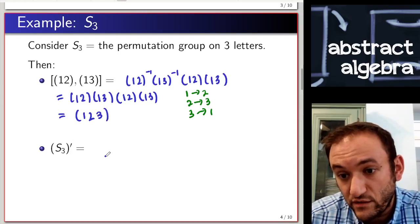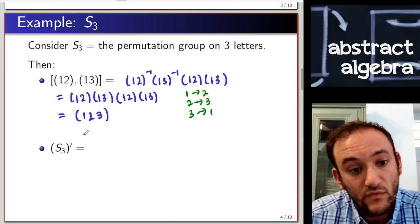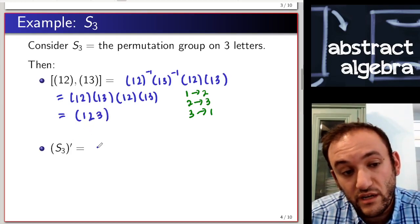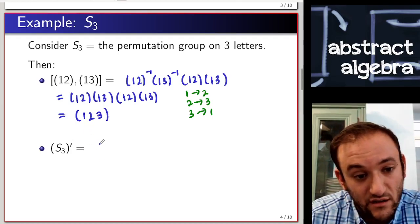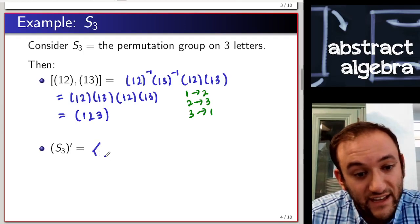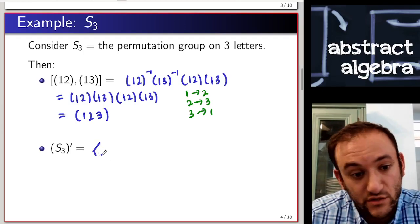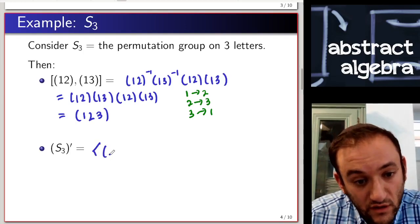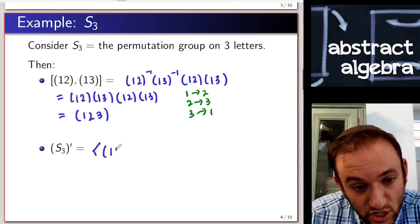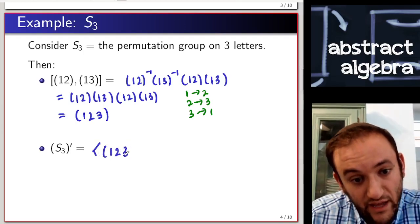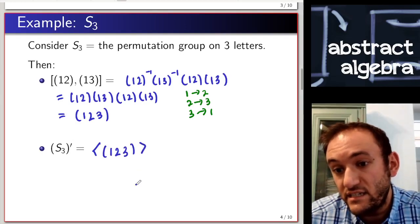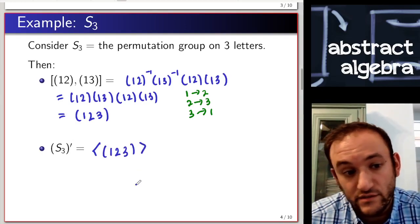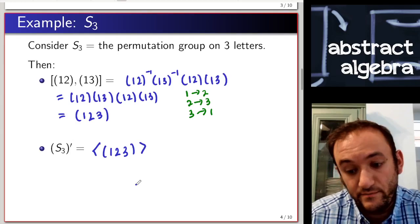So the three-cycle (1 2 3) is a commutator. And in fact, the commutator subgroup is the one generated by this three-cycle — it's the identity and the two three-cycles in S3.